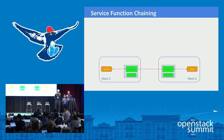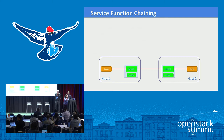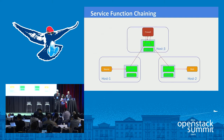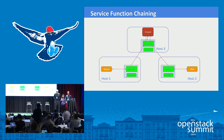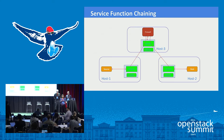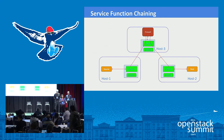So what is service function chaining? Given a source and a destination VM on two hosts, connected directly using OVS, when we bring in a third VM on a different host hosting network functions such as a firewall, we want to classify and steer traffic through this VNF and then forward it to the destination. This is called service function chaining in basic terms.